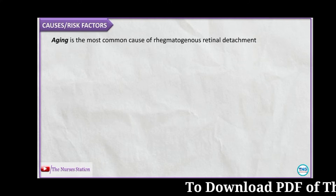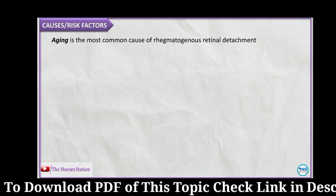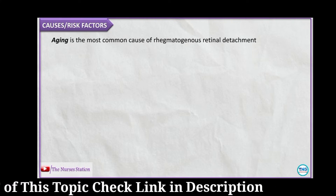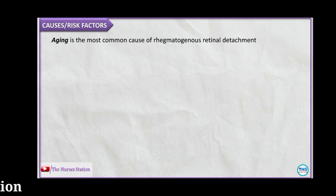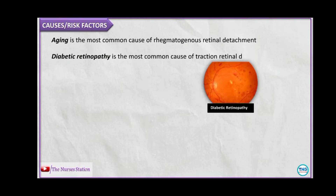The causes include aging, which is the most common cause of rhegmatogenous retinal detachment. As the person gets older, the vitreous in the eye may change in texture and may shrink. Sometimes as it shrinks, the vitreous can pull on the retina and tear it. The next is diabetic retinopathy, the most common cause of tractional retinal detachment. Diabetic retinopathy damages the blood vessels in the retina and can scar the retina. As the scars get bigger, they can pull on the retina and detach it from the back of the eye.